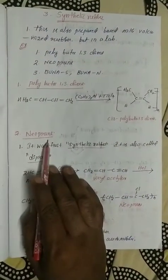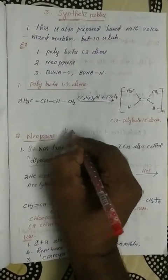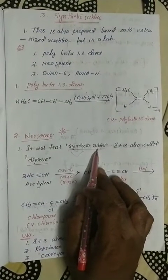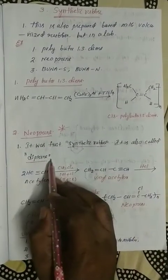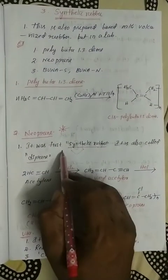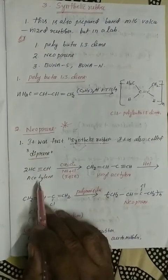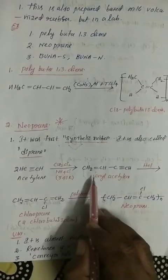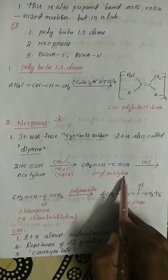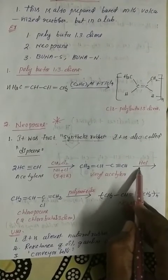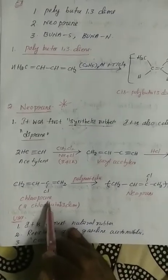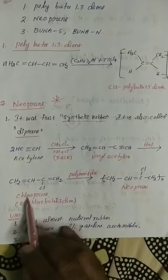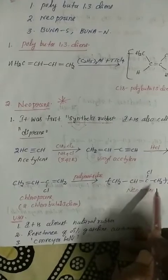The second synthetic rubber is neoprene — it was the first synthetic rubber ever made. Neoprene is also called Duprin. To prepare neoprene: first, acetylene reacts with ammonium chloride or copper dichloride (Cu2Cl2) to form vinyl acetylene. Then vinyl acetylene reacts with HCl to form chloroprene, which is 2-chlorobuta-1,3-diene. Finally, polymerization of chloroprene gives neoprene.